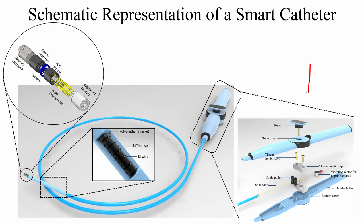From all these experiments, we have thought about how to design an actual catheter that can be used for ablation. This is the maneuvering system: there is a knob, top cover, thread bolts — designed via 3D printing or other manufacturing techniques — a guide pulley, stainless steel tendon, and a vibration motor for haptic feedback. An important gap in current catheters is the absence of haptic feedback: the surgeon can see the force on a display but cannot feel it.